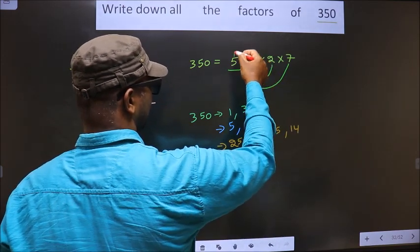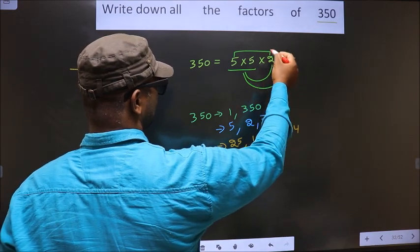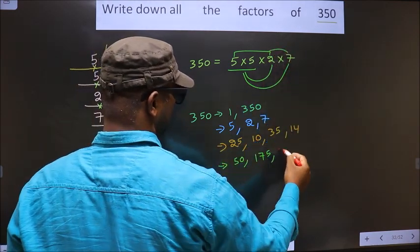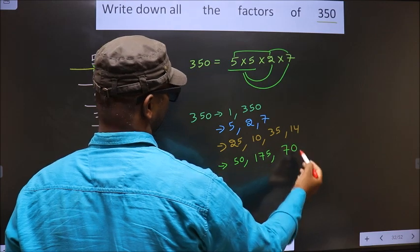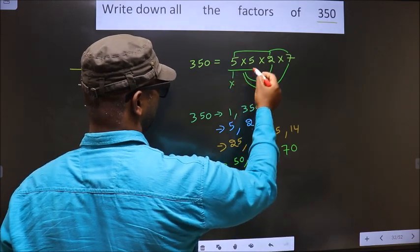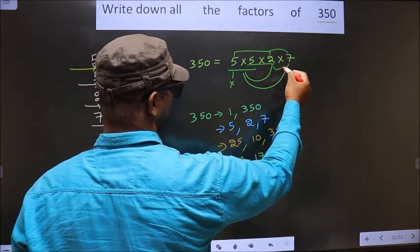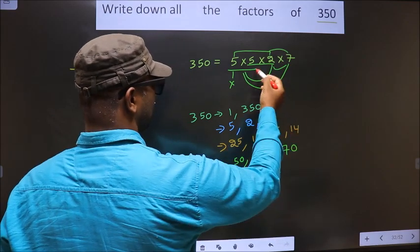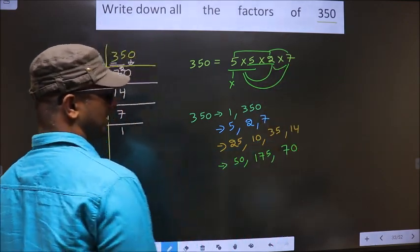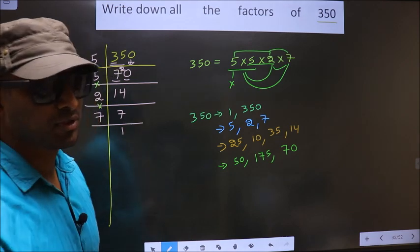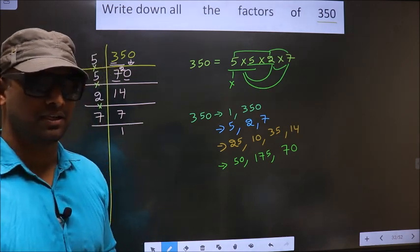Now I take these 2 numbers. 5 into 2 is 10. Combine with 7. 10 into 7 is 70. Now I leave this 5. I fix these 2 numbers. So no more combinations possible. Next.